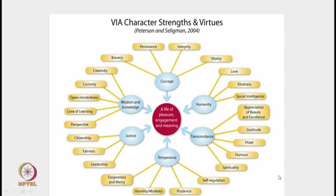The six virtues are wisdom and knowledge, justice, temperance, transcendence, humanity, and courage. Each virtue has certain character strengths. Under wisdom and knowledge: creativity, curiosity, open-mindedness, love of learning, and perspective. For justice: citizenship, fairness, and leadership. For temperance: forgiveness and mercy, modesty, prudence, and self-regulation. For transcendence: gratitude, hope, humor, and spirituality. For humanity: love, kindness, and social intelligence. For courage: bravery, persistence, integrity, and vitality.